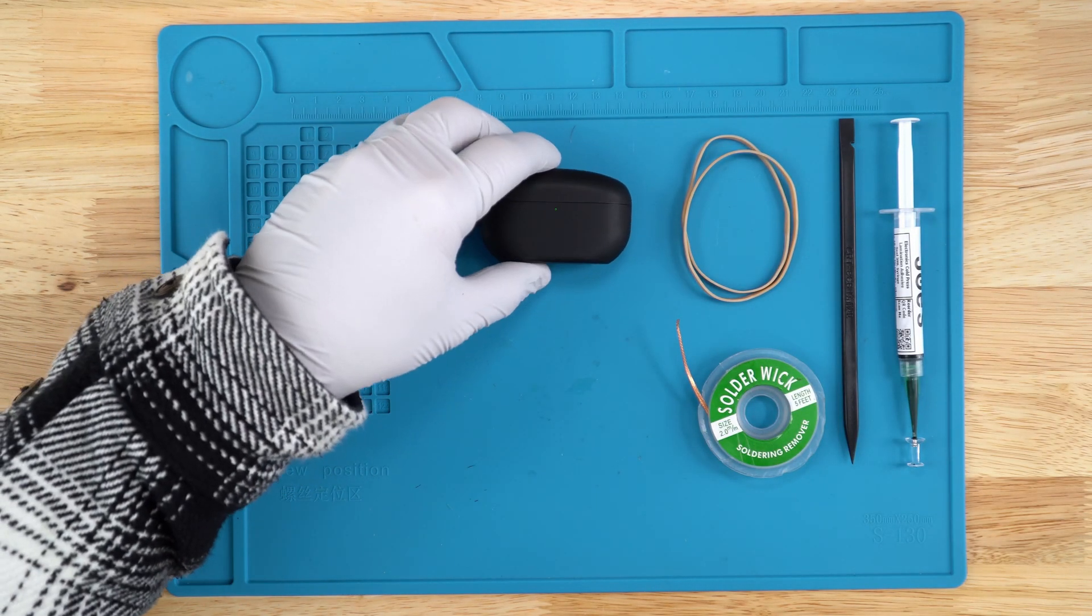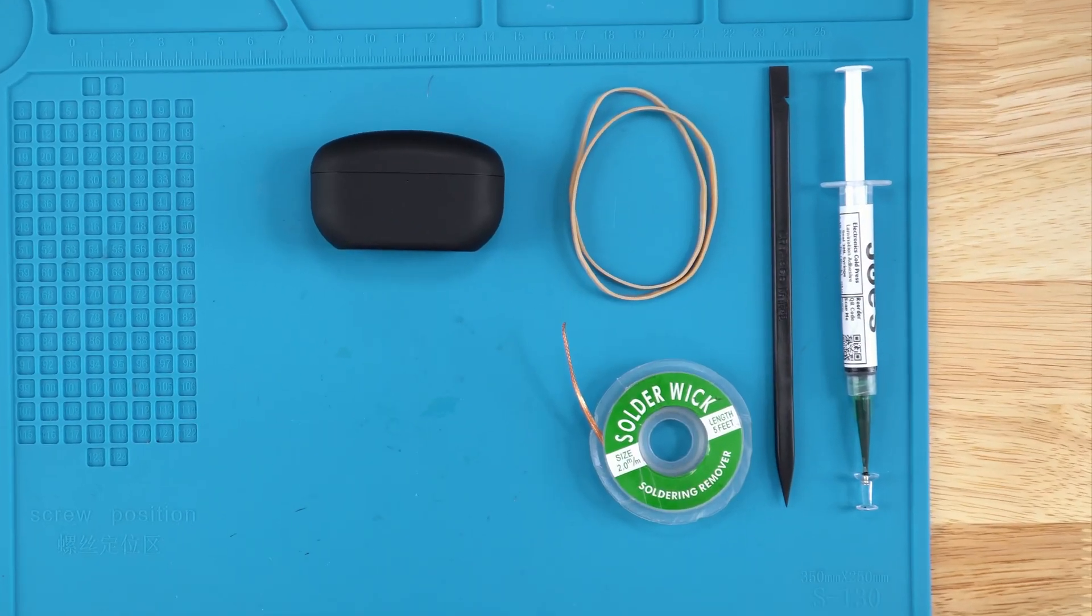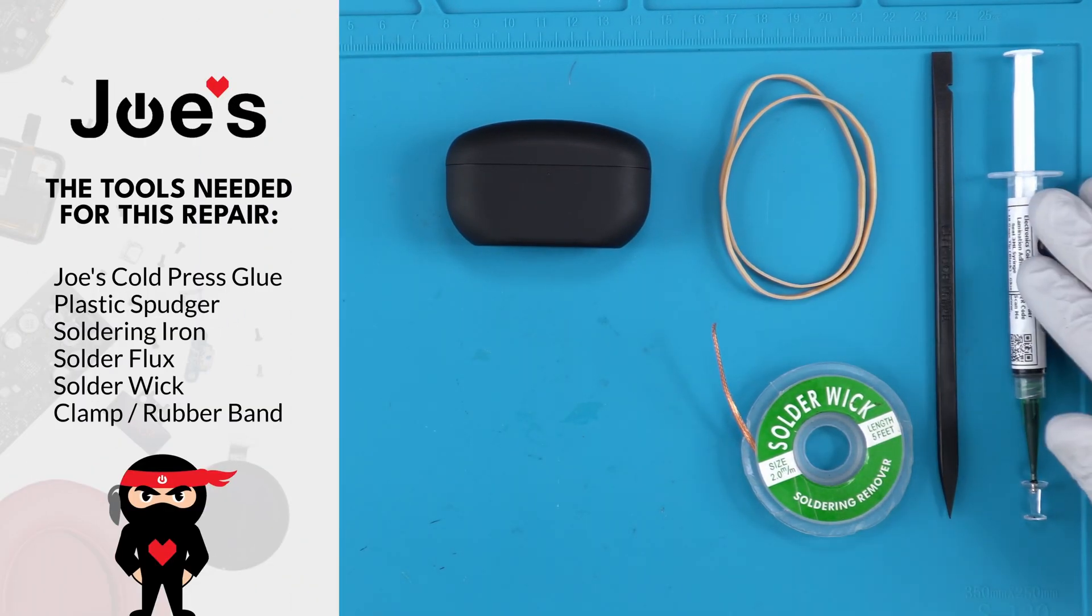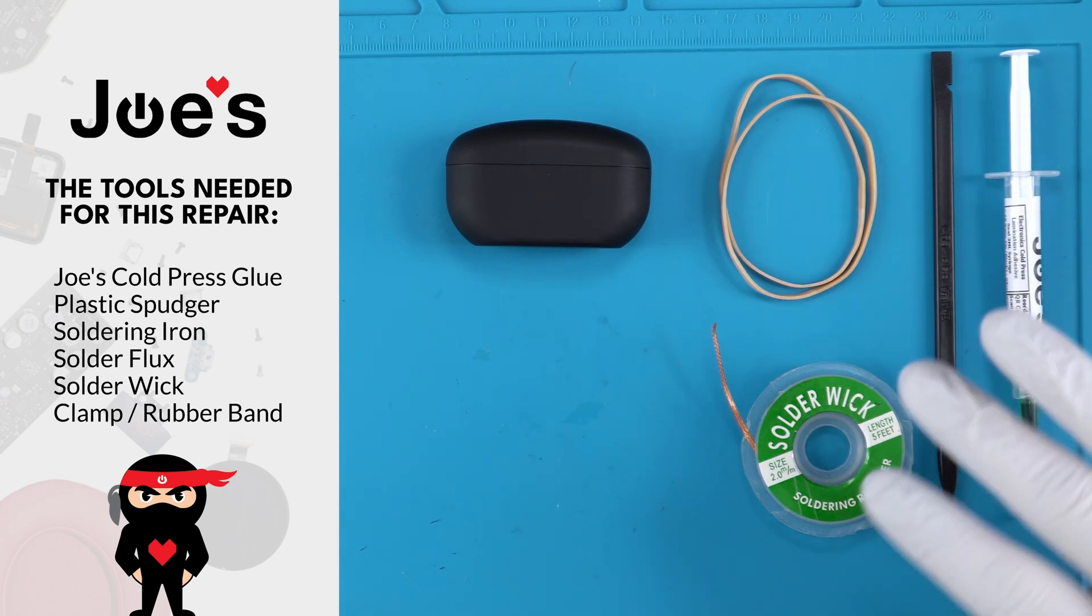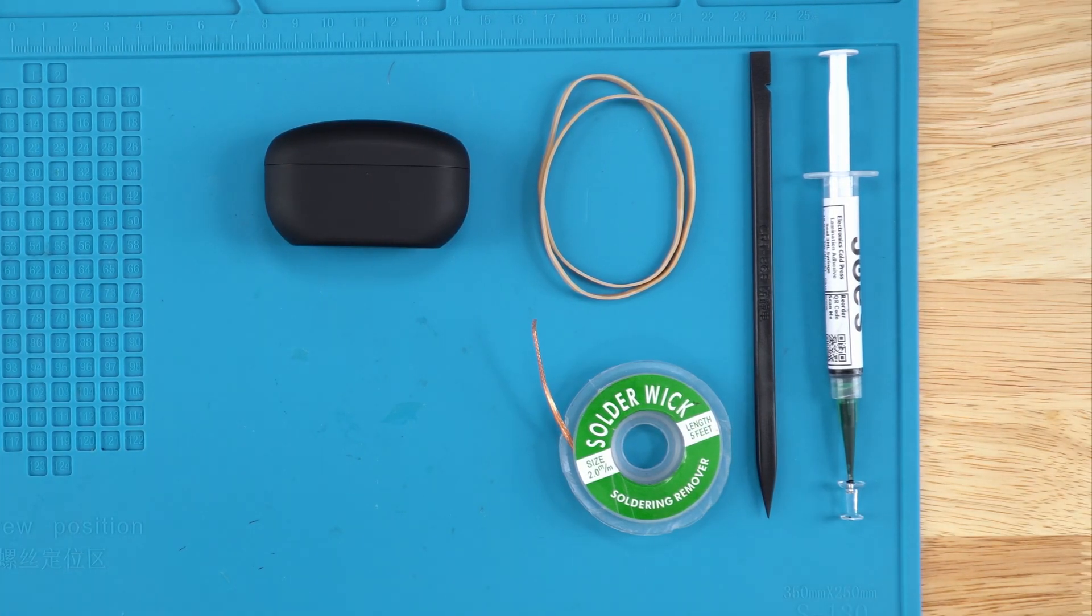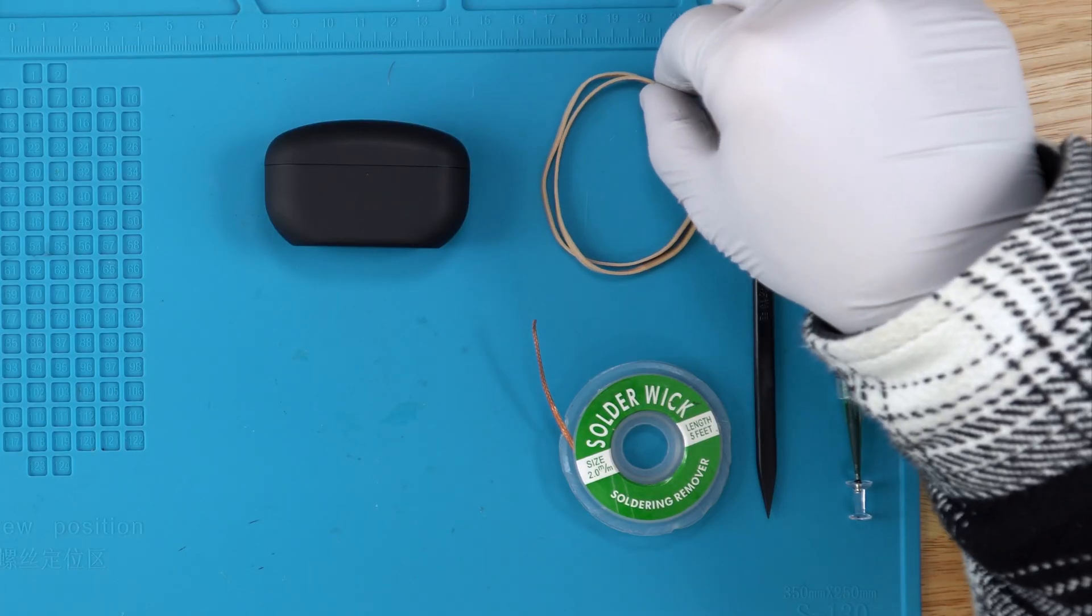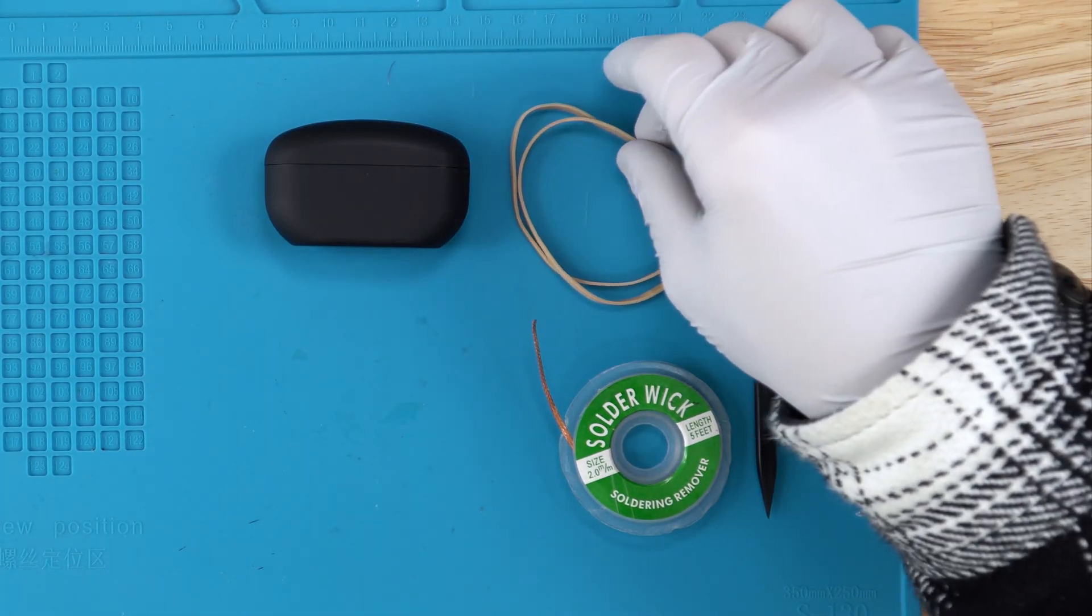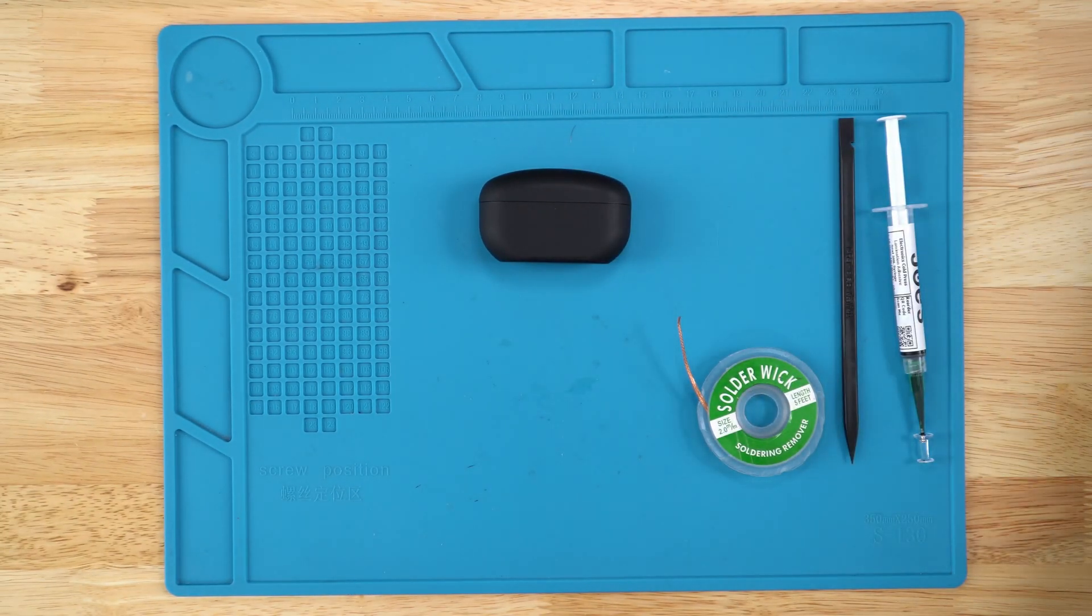Tools you will need would be a soldering iron, some solder, and everything that I have here. So just adhesive to seal it back up, plastic spudger, solder wick you may or may not need depending on how you want to unsolder the battery. Solder wick can help pull out that solder to make it easier to do so, and just something to hold the two halves of the earbuds together as the adhesive is curing and sealing up the device for waterproofing.